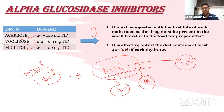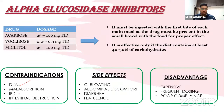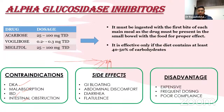These drugs are effective only when the diet contains at least 40–50% complex carbohydrates. Contraindications include intestinal abnormalities — malabsorption, IBD, obstruction, or perforation. Side effects include osmotic bloating, diarrhea, and flatulence. Disadvantages: moderately efficacious but expensive, requiring frequent dosing, and poor compliance due to GI side effects.